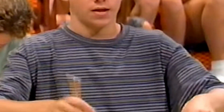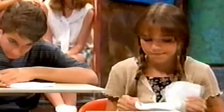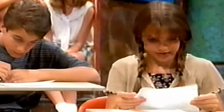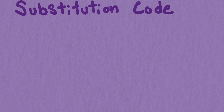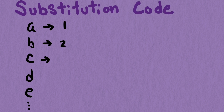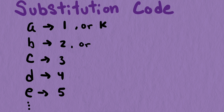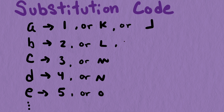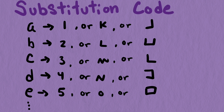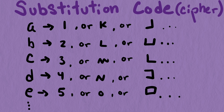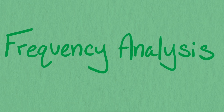Did you and your friends ever invent secret languages so you could communicate without others knowing? If so, it may have looked something like a substitution code, one of the simplest forms of code. A substitution code operates by assigning each letter of the alphabet to another symbol. These symbols could be numbers, letters, or even small drawings or doodles. The great weakness of these codes, also known as substitution ciphers,